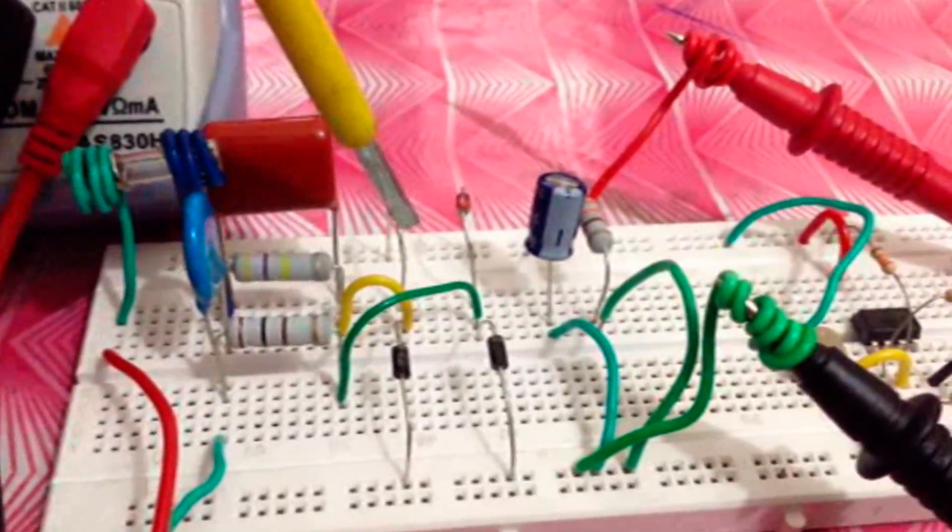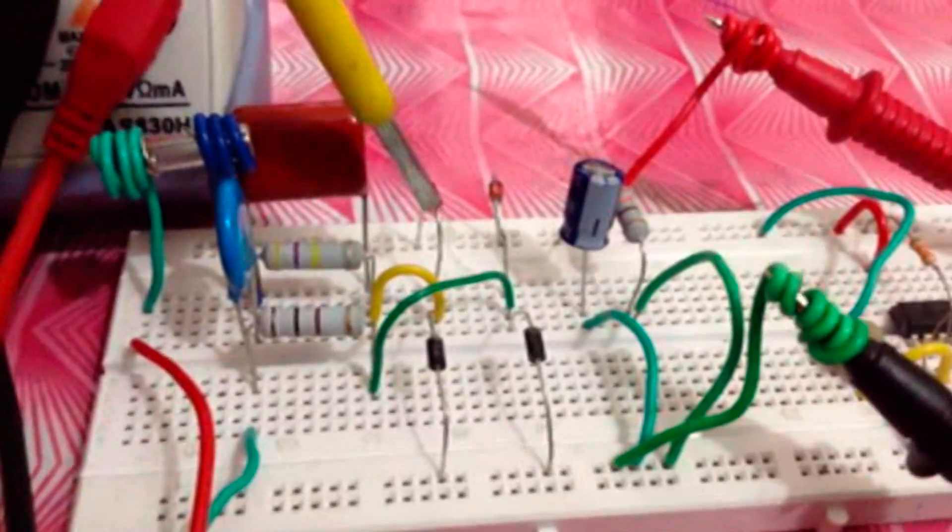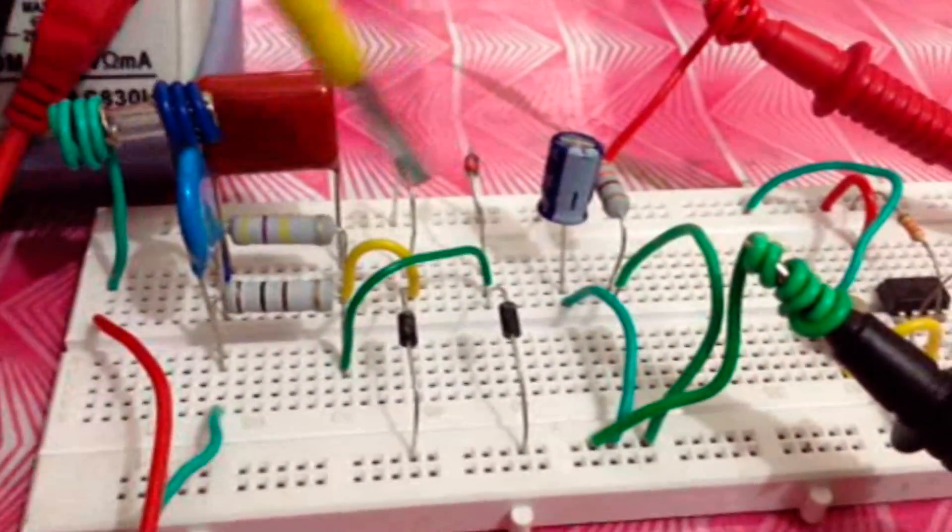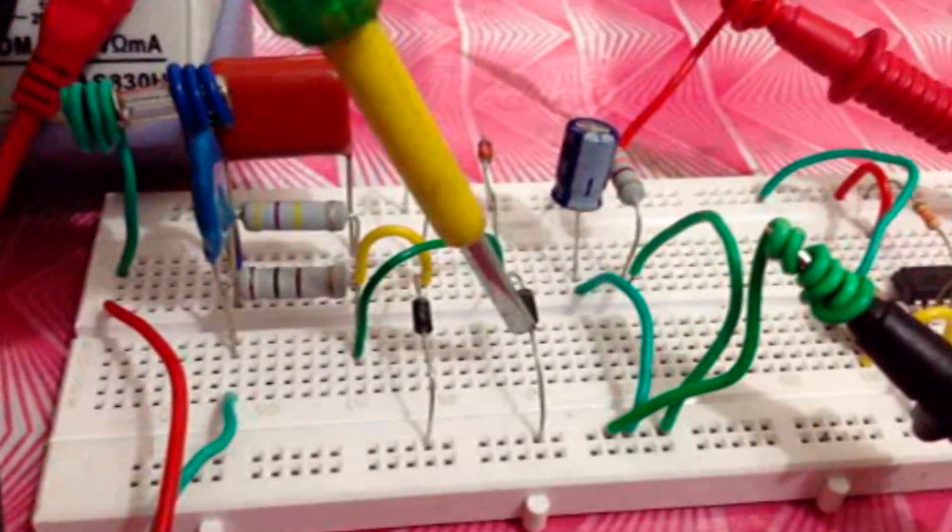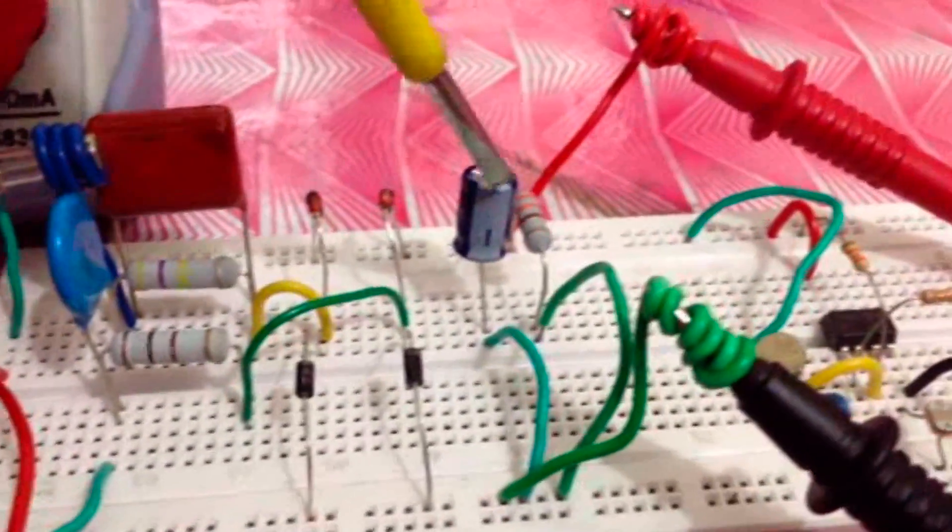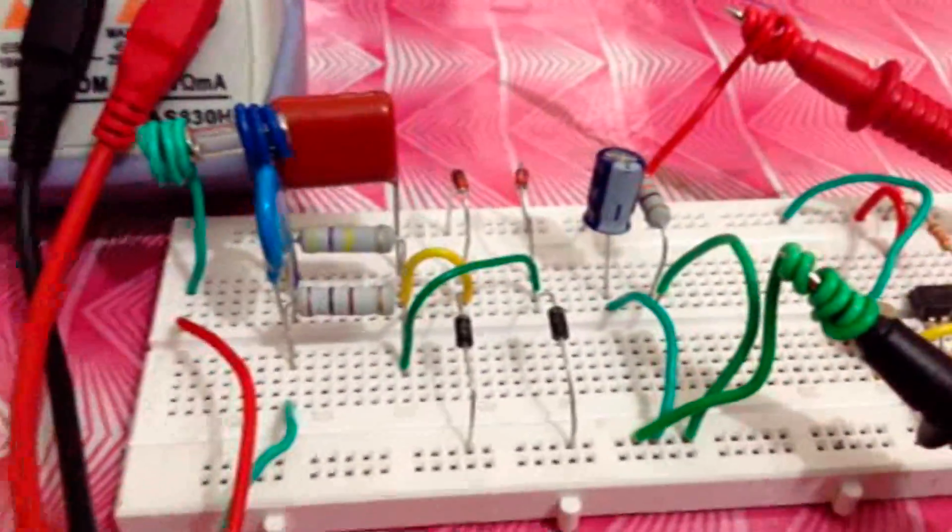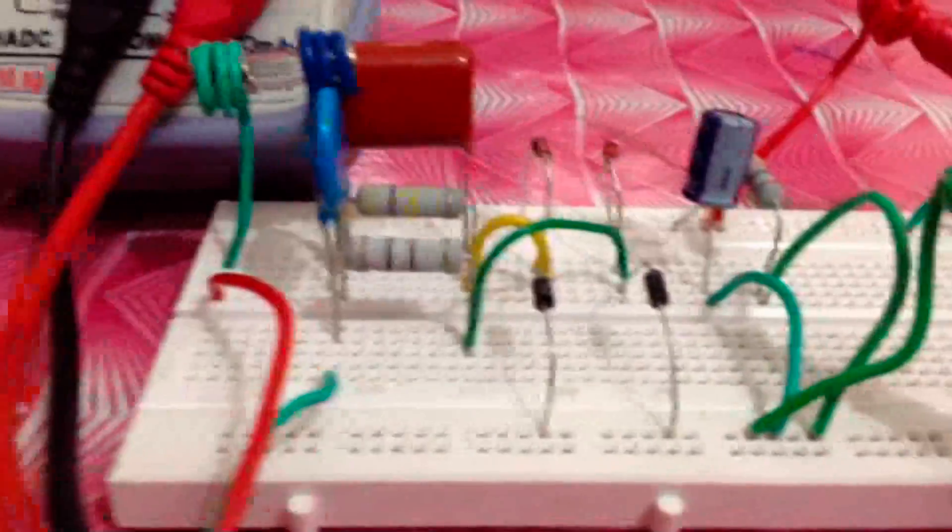Four diodes constitute a bridge rectifier to rectify AC input. Among these, the first two diodes are Zener diodes which will clip the output voltage at Zener voltage. Next there is a capacitor filter to filter the rectified output. I also used a load resistor to test the current driving capability.